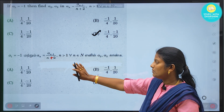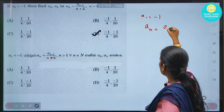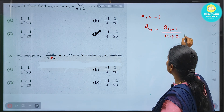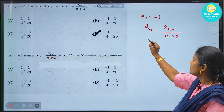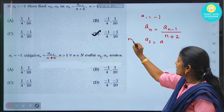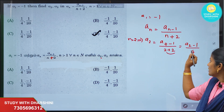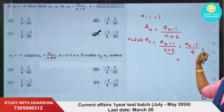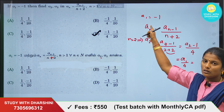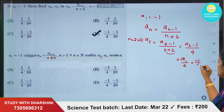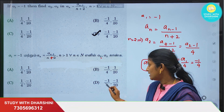We are given a1 = -1. Using the recurrence an = a(n-1)/(n+2), for a2: replace n=2, so a2 = a1 / (2+2) = a1/4 = -1/4. So a2 = -1/4.